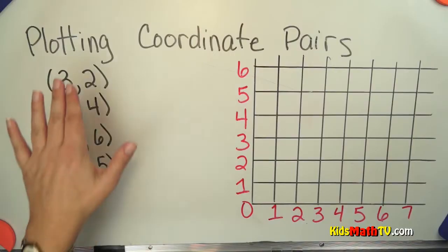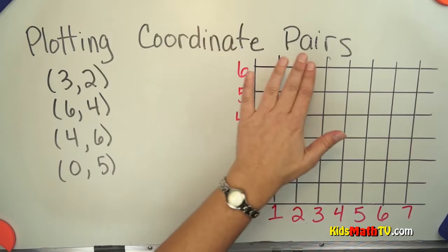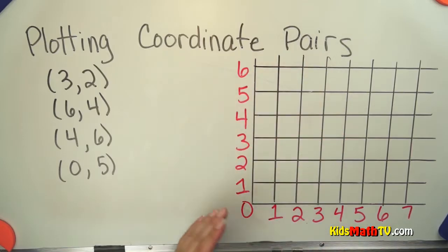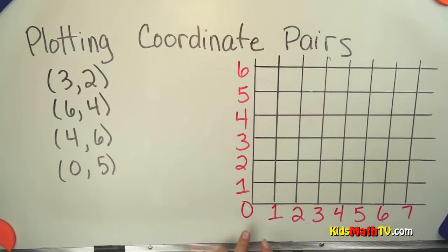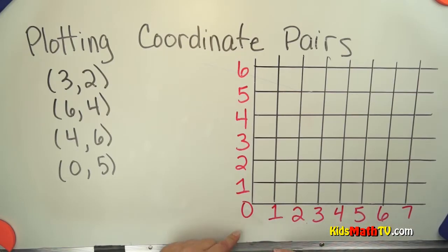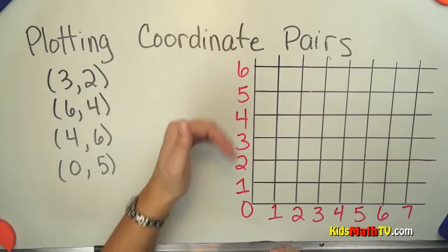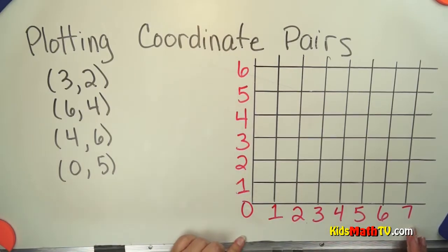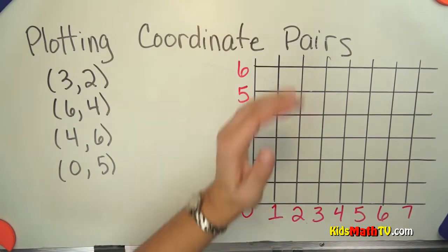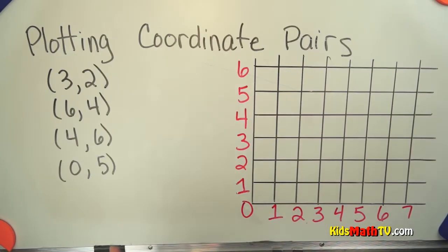In this lesson you will learn about plotting coordinate pairs. We have a coordinate grid here. It starts with zero, and each line going to the right goes up one number, and each line going up goes up one number. So one to six on this axis and one to seven on the other. This grid could keep going, but we're just using part of the grid.